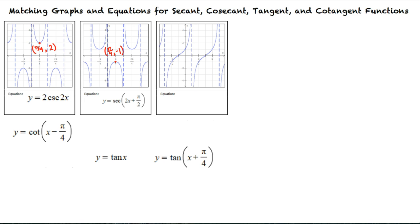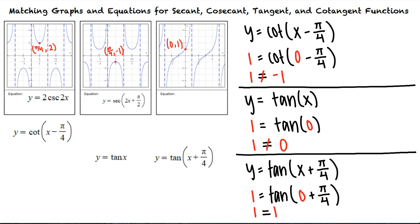That's right, and we see that this graph contains the point (0, 1). So we will check which equation has this point as a solution by substituting 0 for x and 1 for y into each equation. We see that this point is a solution only for y = tan(x + π/4), so this is the equation that matches our final graph.